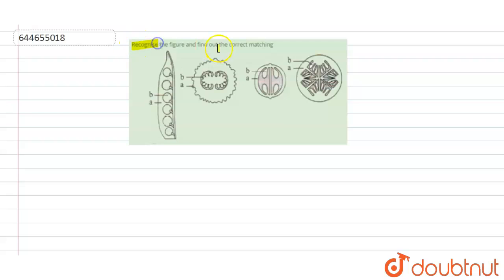Hello everybody, the question here is recognize the figure and find out the correct matching. As you can see here, this is a pea pod.